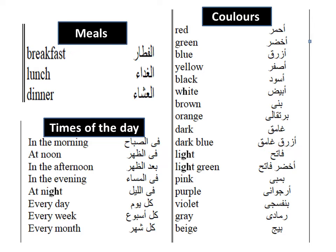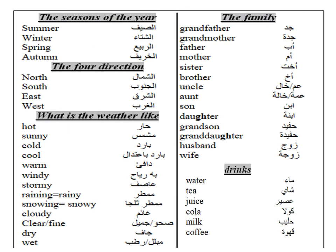Light Green, Pink, Purple, Violet, Gray, Beige. Seasons of the Year: Summer, Winter, Spring, Autumn.